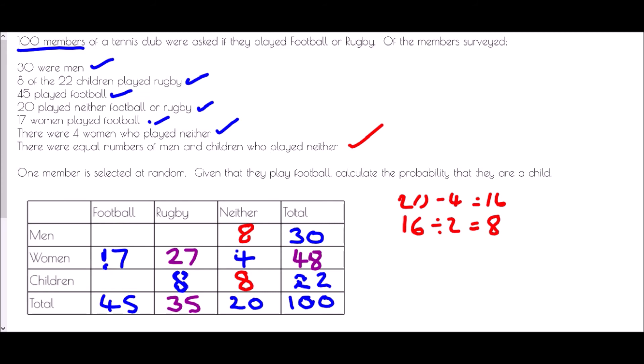Using that information: 27 women and 8 children play rugby — that makes 35 in total, so actually there are 0 men playing rugby. Sticking with the men: 0 play rugby, 8 play neither, and in total there are 30 men, so 30 take away 8 is 22 men who play football. For our final value, we can use either the football column or the children row. The children row: 8 play rugby and 8 play neither, that's 16. We need another 6 to get to 22. Or using the football column: 22 plus 17 is 39, and we need 6 more to make 45. Either way, 6 children play football.